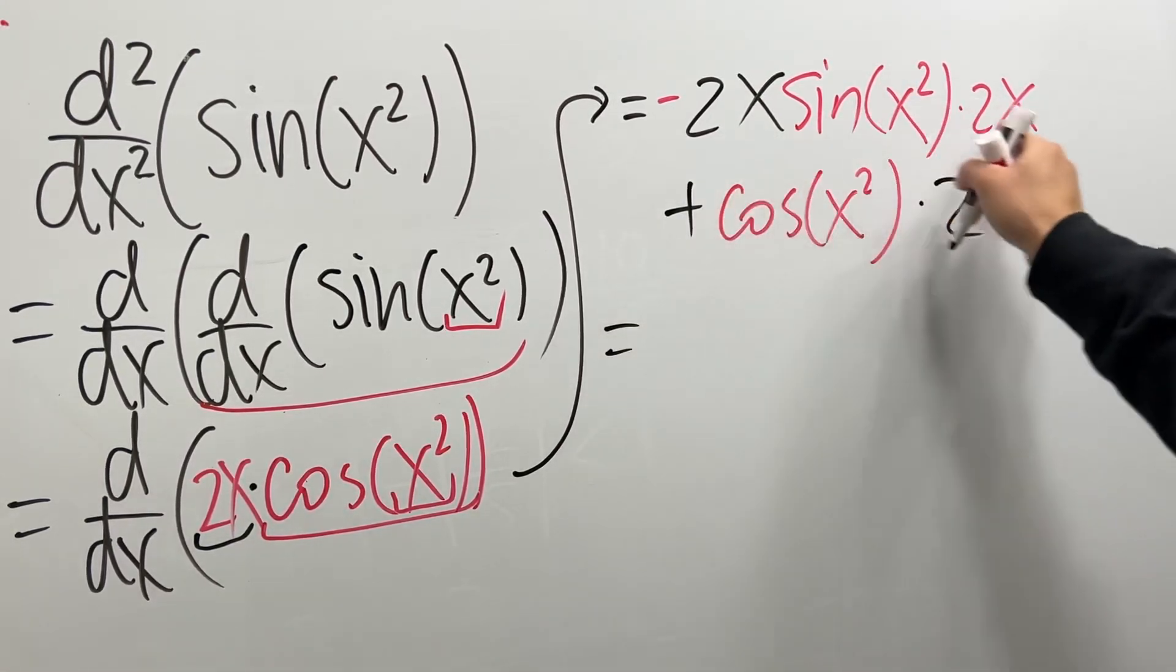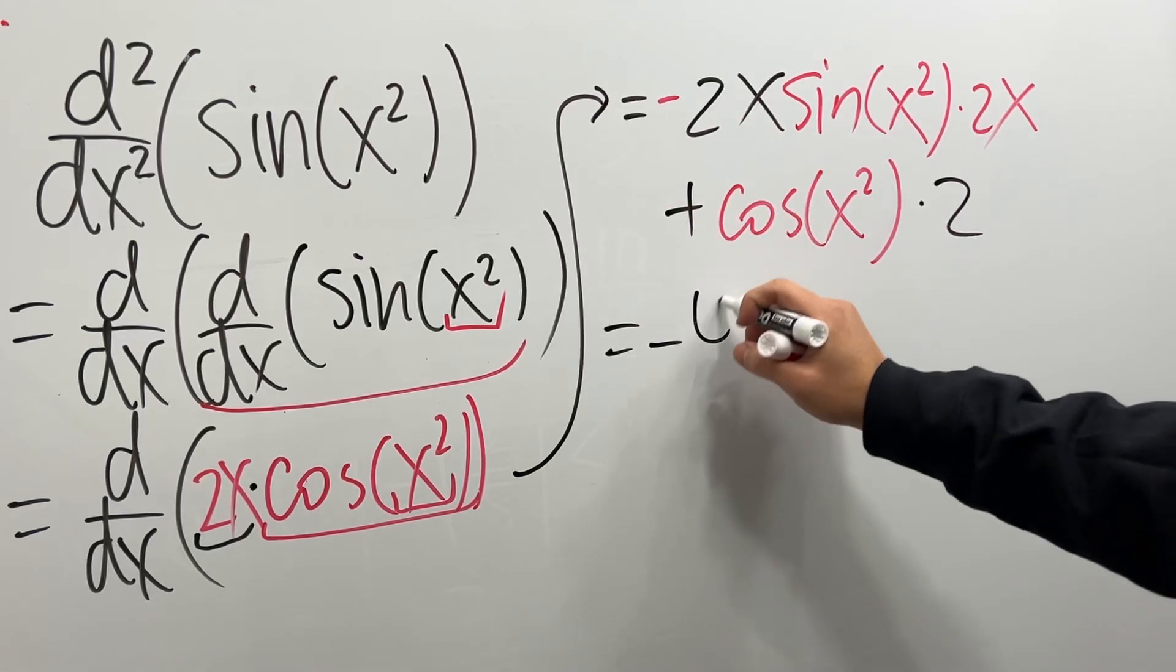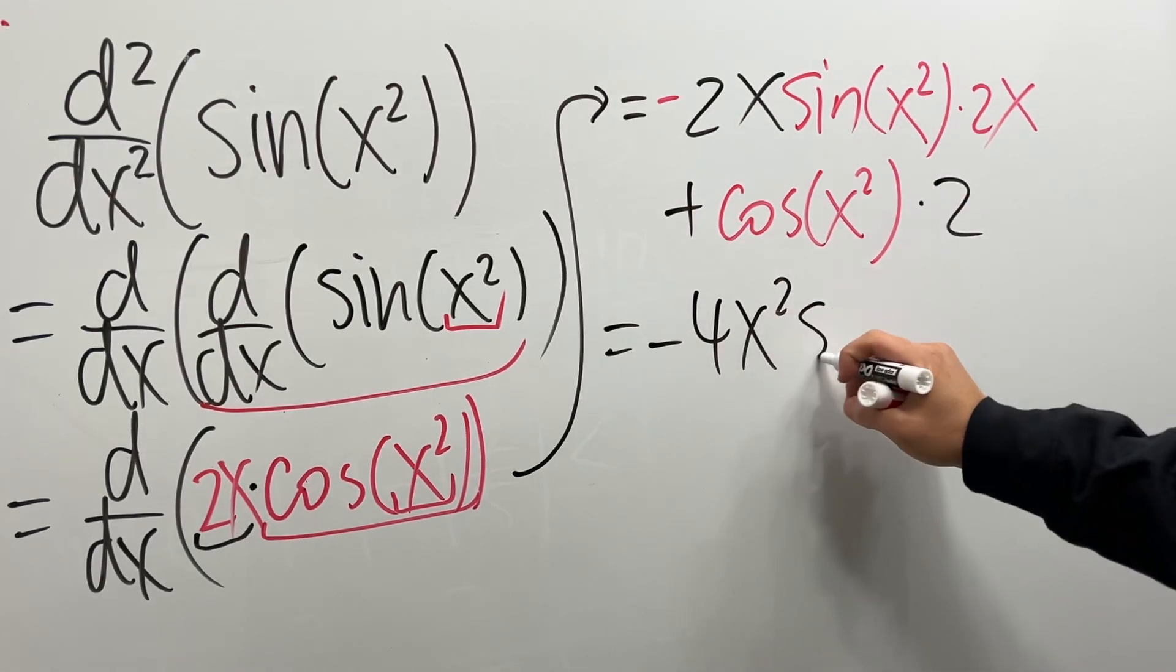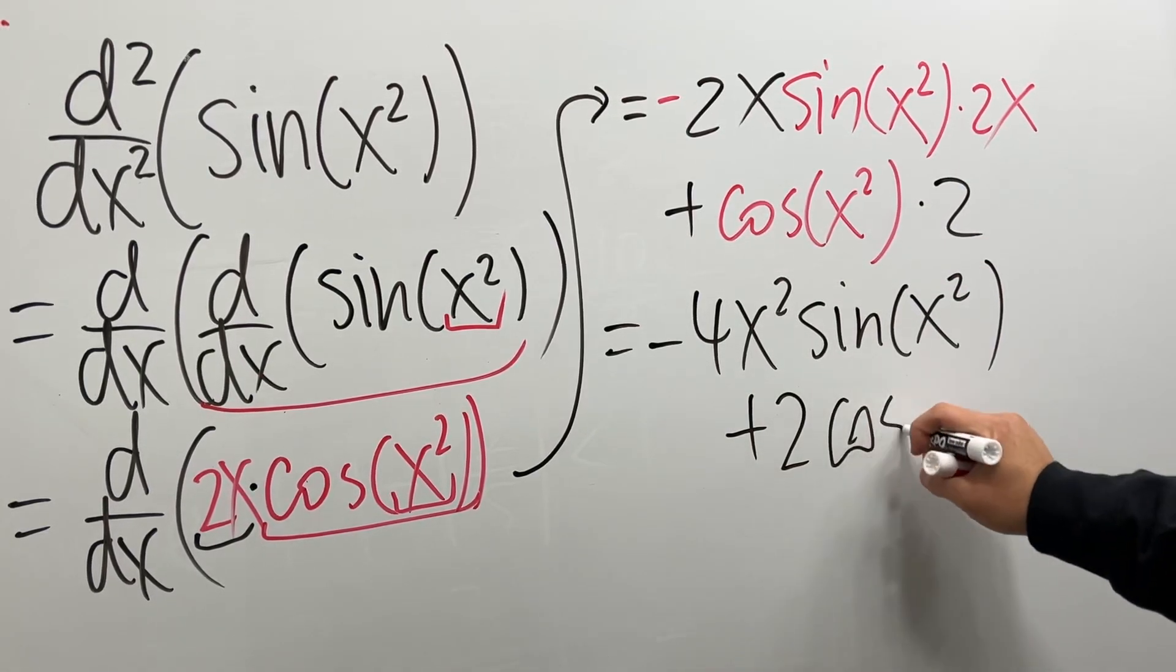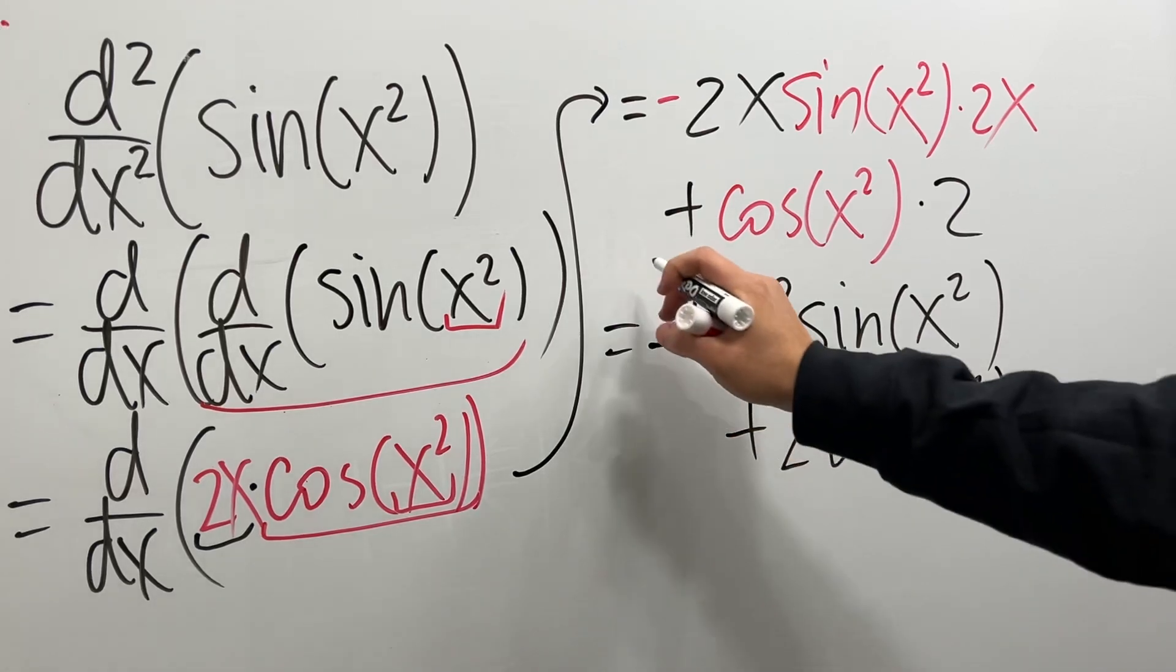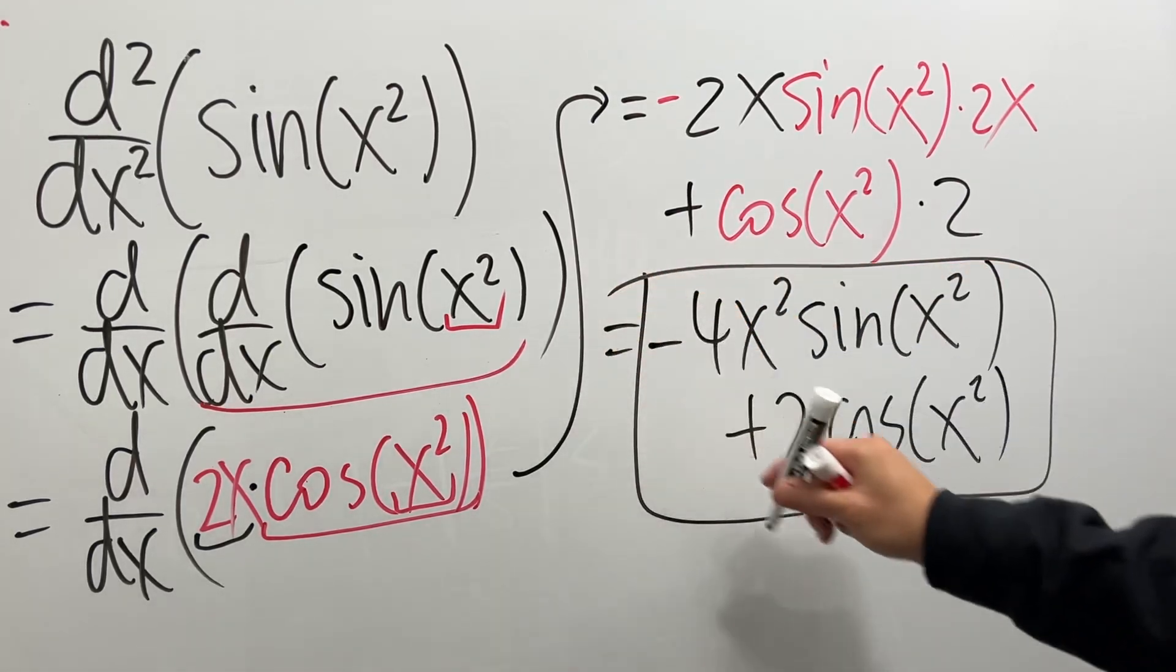Finish this. This times that. We have negative 4x² times sine of x squared. And then, plus 2 cosine of x squared. Do not put down the plus c. This is the derivative. Done.